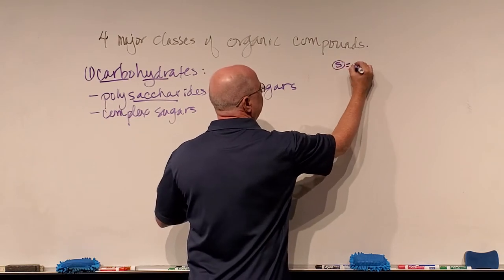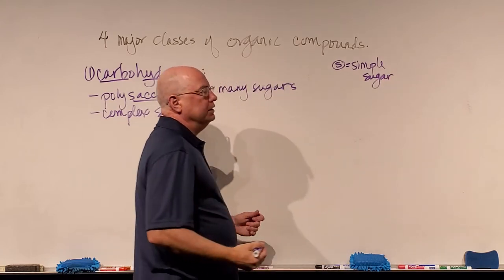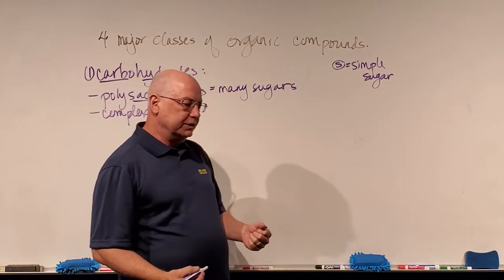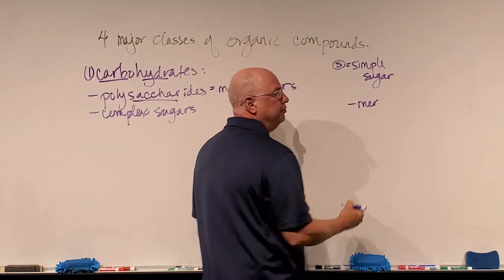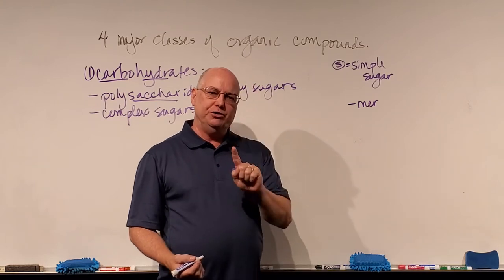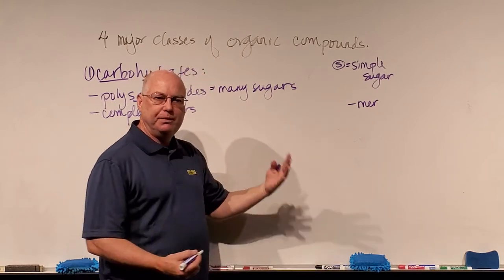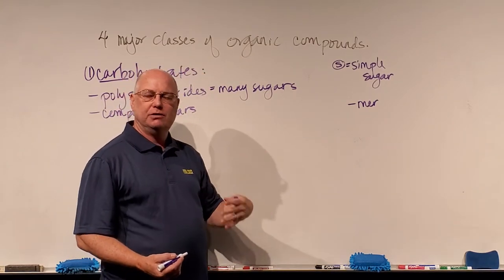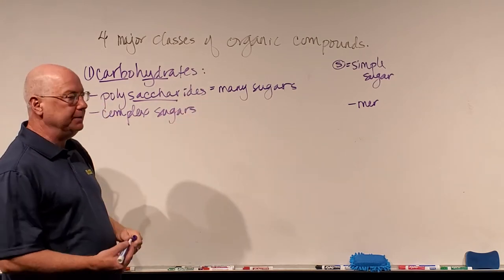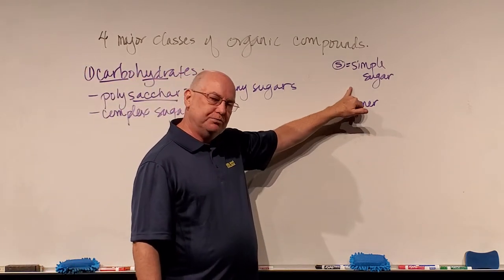My simplified abbreviation for a simple sugar is going to be a little 's' with a circle around it. Simple sugars are individual units of sugars. The suffix '-mer' means unit. If I say monomer, it means one unit. A dimer would be two units, trimer three, and so on — but after about three we just call them polymers, 'poly' meaning many. So a polysaccharide is really a polymer of simple sugars — many simple sugars strung together.